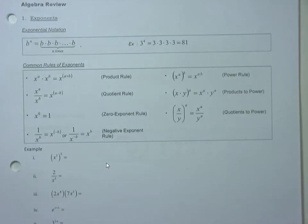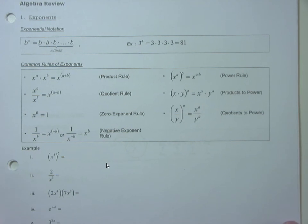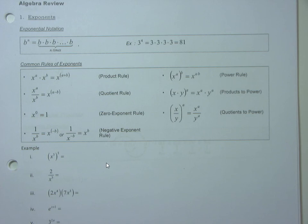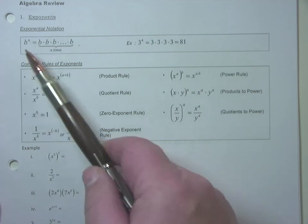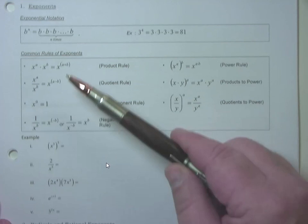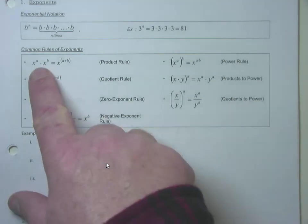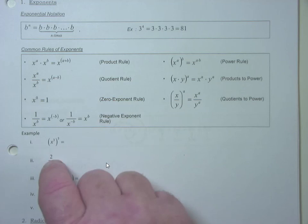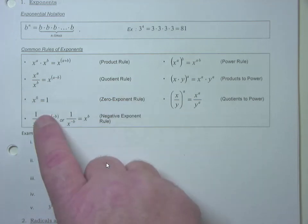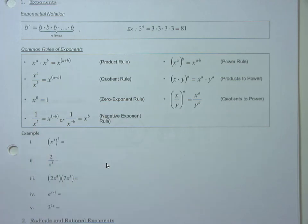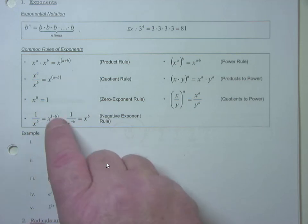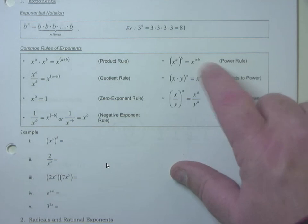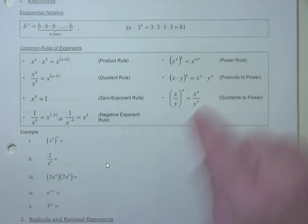The big deal is cleaning up stuff — that's going to be the trick to Calculus 2 integration: clean it up first. Don't forget your exponential notation: b to the n means b multiplied n times. Rules of exponents: when you multiply like bases, you add exponents; when you divide like bases, you subtract exponents. Anything to the zero power is 1. One over x to the b is x to the negative b — negative exponents go where they're not. Power to a power, you multiply your exponents.